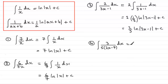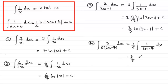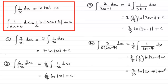For the last one, we pull out 3/5 as the constant: 3/5 times the integral of 1 over (2x minus 7) with respect to x. The a value here is 2, so the integral gives 1/2 times the natural log of the mod of (2x minus 7). Cleaning up: 3/5 times 1/2 gives 3/10, so the answer is 3/10 times the natural log of the mod of (2x minus 7), plus c.